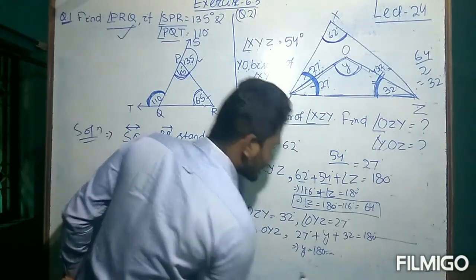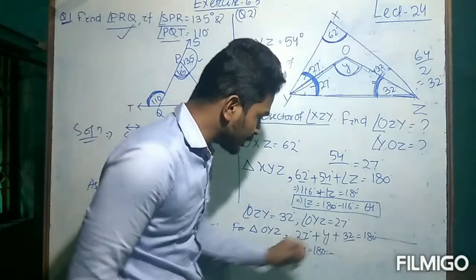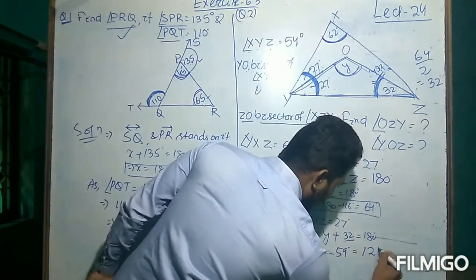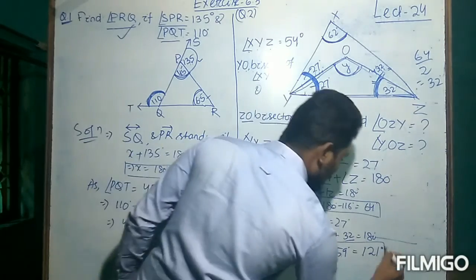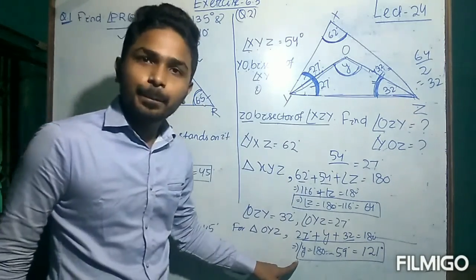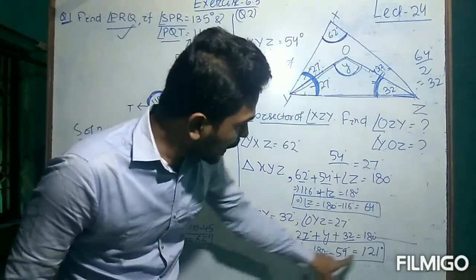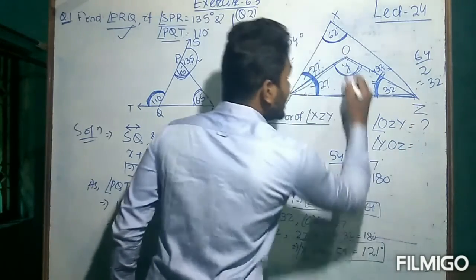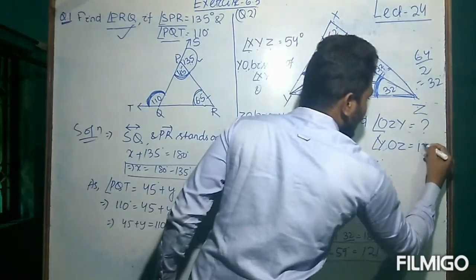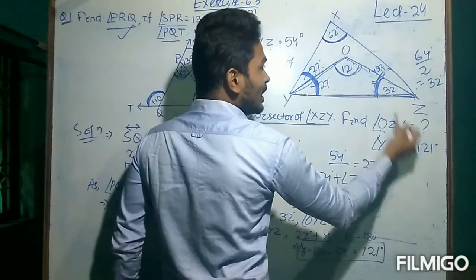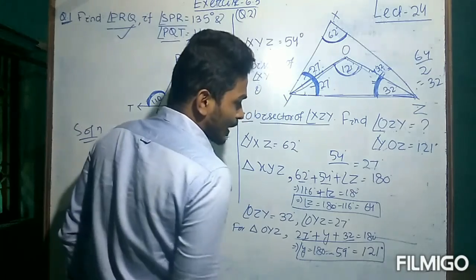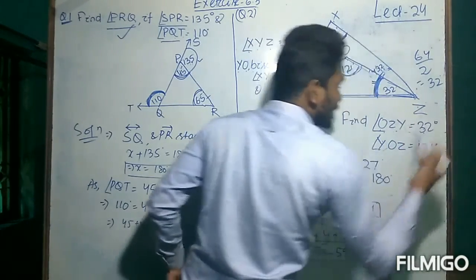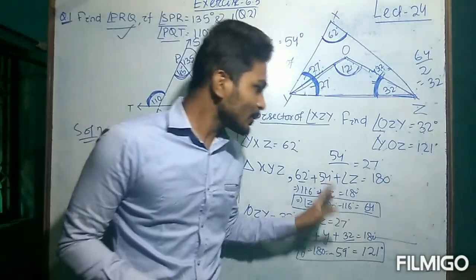So we find the value of angle Y, that is angle YOZ, is 121 degrees. Our target was to find this value, so Y equals 121 degrees. And angle OZY, which is 64 divided by 2, is 32 degrees. So this angle is 32 degrees. It is a very easy question — you can easily do it.